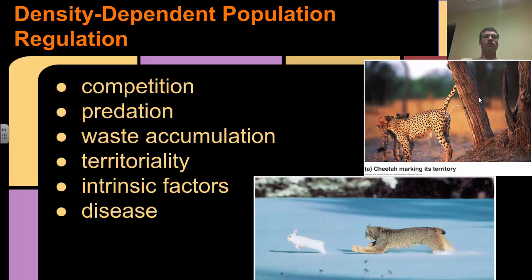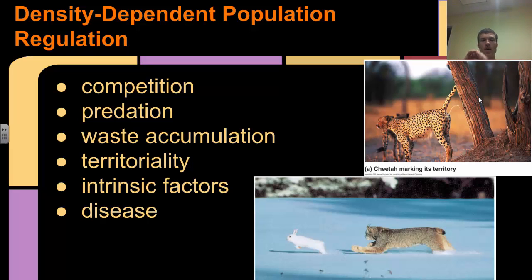These are some of the density-dependent population regulators. Competition - there's only a limited amount of resources, so as density increases, competition increases. Predation - you're more likely to get eaten if there's a larger number of organisms because it's easier for predators to pick them out. Waste is going to accumulate, helping spread diseases and making areas less habitable. You have territoriality - as density increases you have more competition over territory and space. Some intrinsic factors: if a mouse has a large litter, it's not going to be able to take care of all of them, so some might die off. And finally, diseases - as you are more closely clumped together, disease increases and it's easier to pass diseases between individuals in a population.